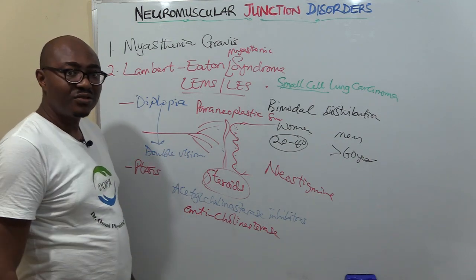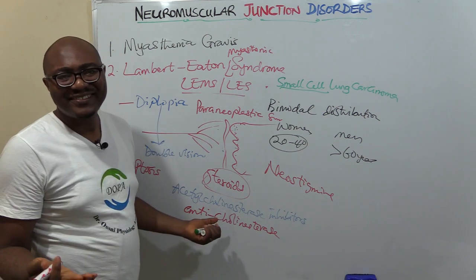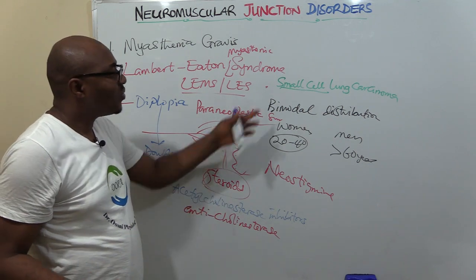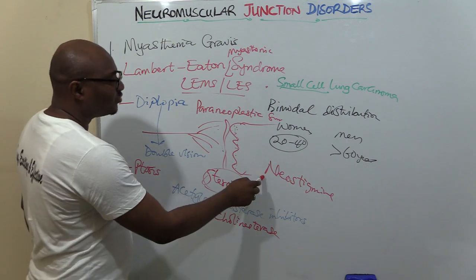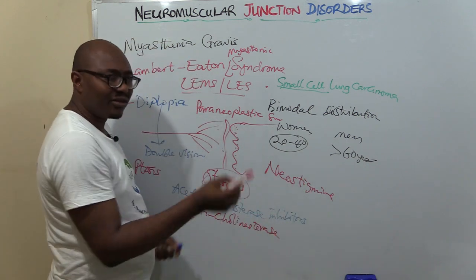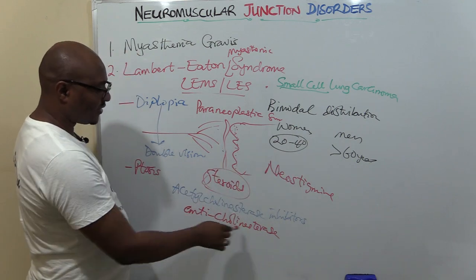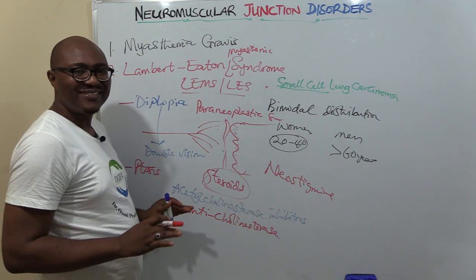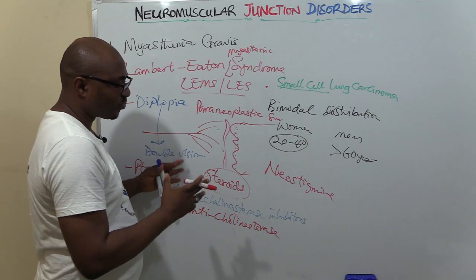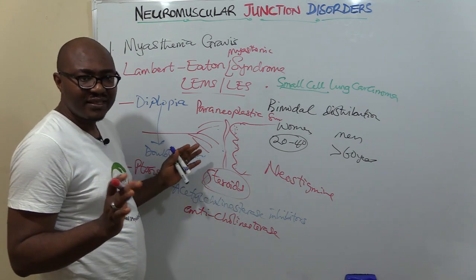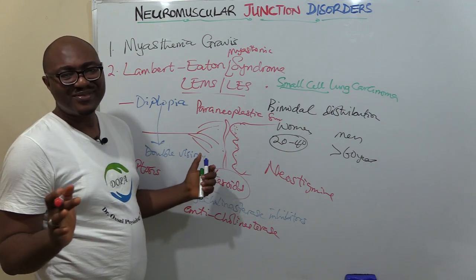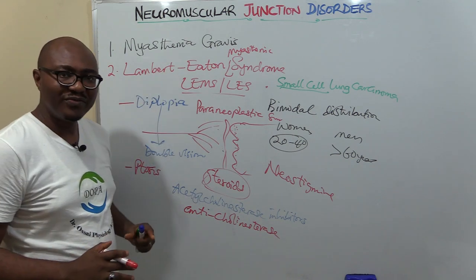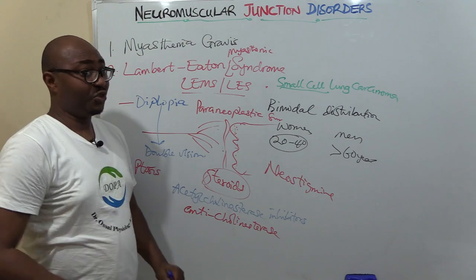How do you treat it? Of course, deal with this lung cancer, and most people find relief when the cancer is dealt with. The same drug neostigmine and similar anticholinesterase drugs also help because it's a neuromuscular junction disorder—they provide more acetylcholine and improve it. Steroids also help. This is basically what you need to know about neuromuscular junction disorders—these two very important diseases. I'm going to see you in the next video.